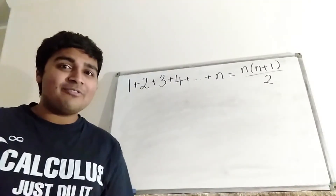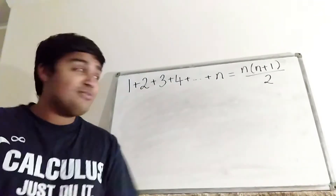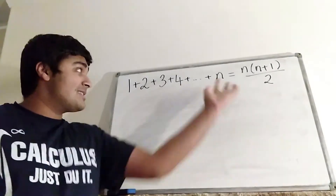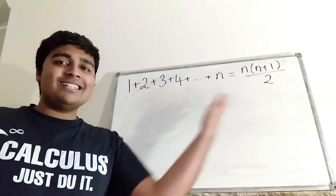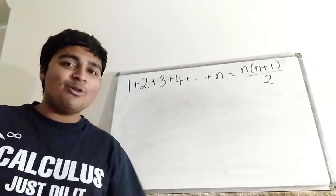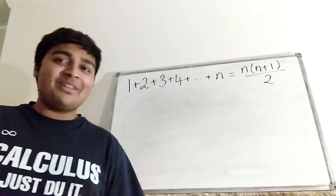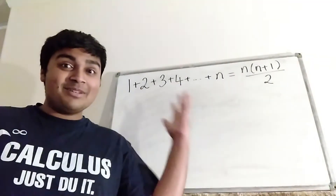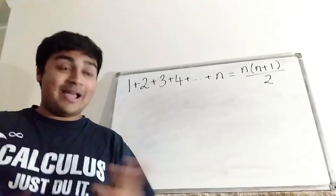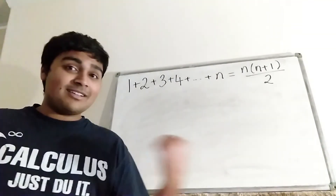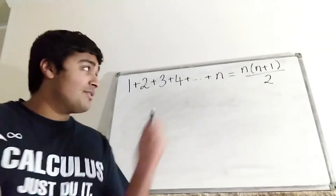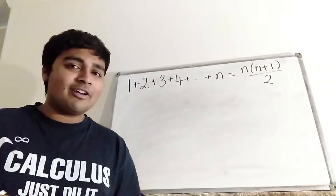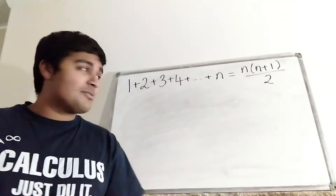Hi, thanks for joining me today. I've got a fun little proof. I'm going to prove that 1 plus 2 plus 3 plus 4, and so on, all the way up to some natural number n, equals n times n plus 1 over 2. Before you click off the video thinking you've seen this result before, today's proof is perhaps one you haven't seen before. I've done another non-standard proof of this result using combinatorics and a quite nice diagram — I'll leave a link for that in the description below.